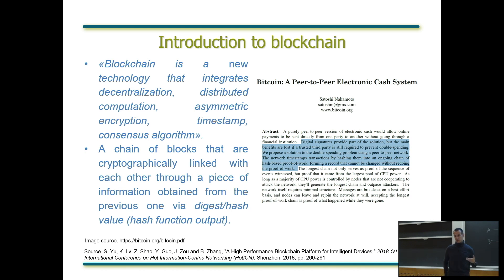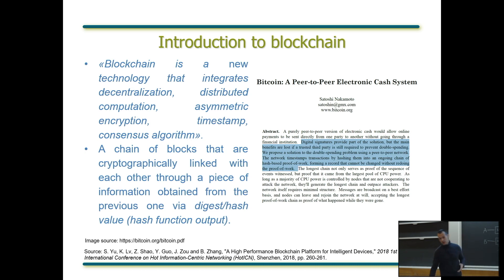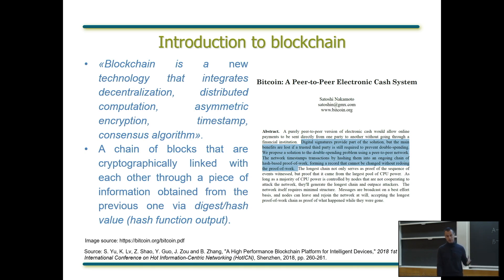In a more utilitarian manner, we could say that blockchain is a chain of cryptographic blocks linked with each other through a piece of information obtained from the previous one via hash or digest values — what we refer to as hash function output. On the right part of this slide you can see a definition straight from the horse's mouth: the Bitcoin white paper published in 2008 by Satoshi Nakamoto, whoever they are, their identity yet to be known.